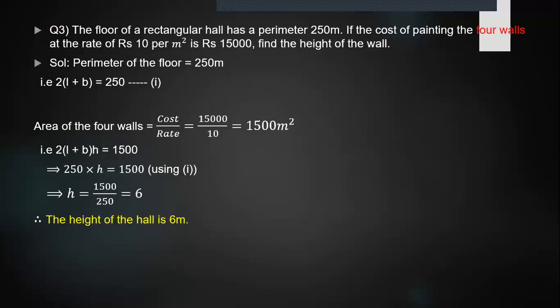Then I'm taking the third question. The floor of a rectangular hall has a perimeter 250 meters. If the cost of painting the four walls at the rate of rupees 10 per meter square is rupees 15,000, find the height of the wall.